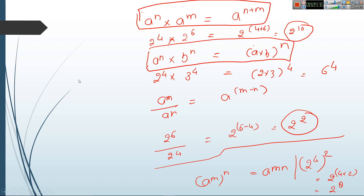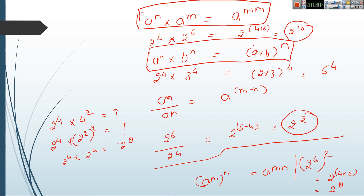You may get a question like: 2 to the power 4 multiplied by 4 to the power 2. It won't be that straightforward in the exam. You can rewrite 4 as 2 squared, so 4 to the power 2 becomes 2 to the power 4. Then multiply: 2 to the power 4 times 2 to the power 4 equals 2 to the power 8. So that will be your answer.